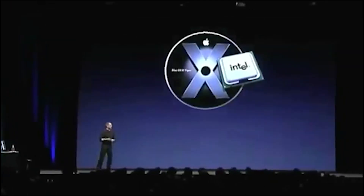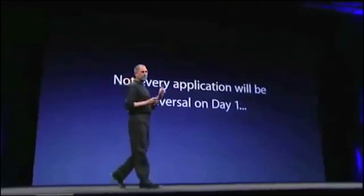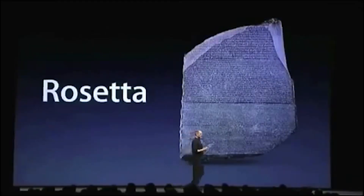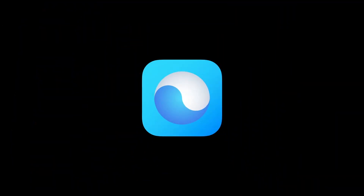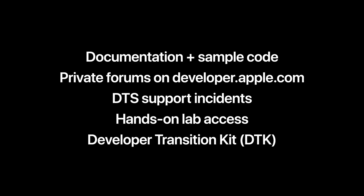Mac OS X is singing on Intel processors. We want to make sure that users can run all of their apps on day one. Not every application is going to be universal on day one. Rosetta 2 automatically translates your existing Mac apps so they work on new Macs with Apple Silicon, and Rosetta allows us to translate PowerPC to Intel. The vast majority of Mac apps can be recompiled as universal in a few days, and your Cocoa app will be running with an Intel version.